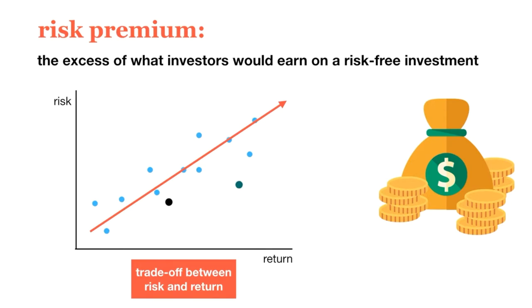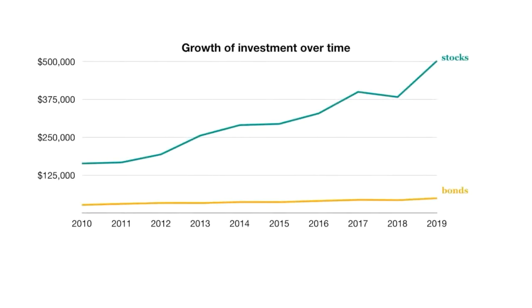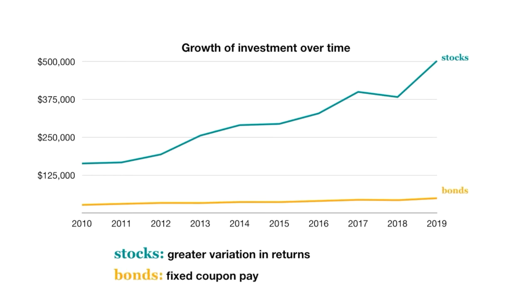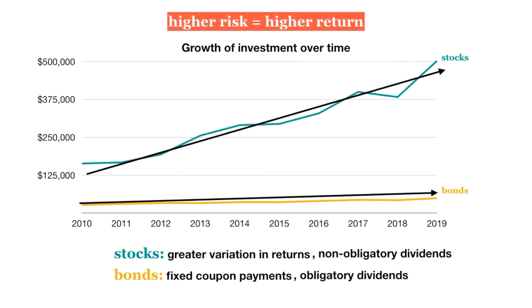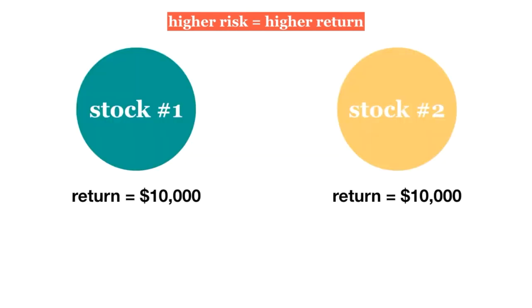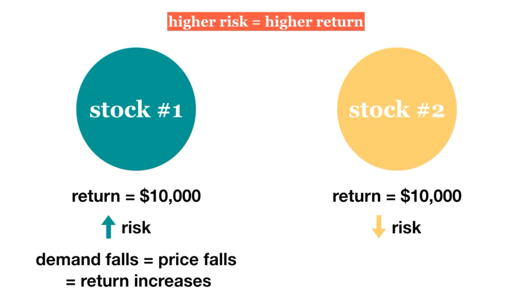Some assets have greater variation in their returns, making them more unpredictable and therefore more risky. Stocks have historically been the most unpredictable and therefore risky class of assets, while bonds have shown more consistent returns and are considered a less risky investment, because the fixed coupon rates are predictable and the bond issuers are legally obligated to pay dividends. But notice that overall, the average return of the stock market is much higher than that of the bond market. Those willing to take on the added risk of stock investments are rewarded with higher returns on average. This isn't just a coincidence — the market will ensure that riskier assets pay higher returns. If two assets paid the same return but had two different risks, no one would invest in the riskier of the two, causing the price to fall, which will increase the return on investment. We will discuss this more in our next video on the capital market line.